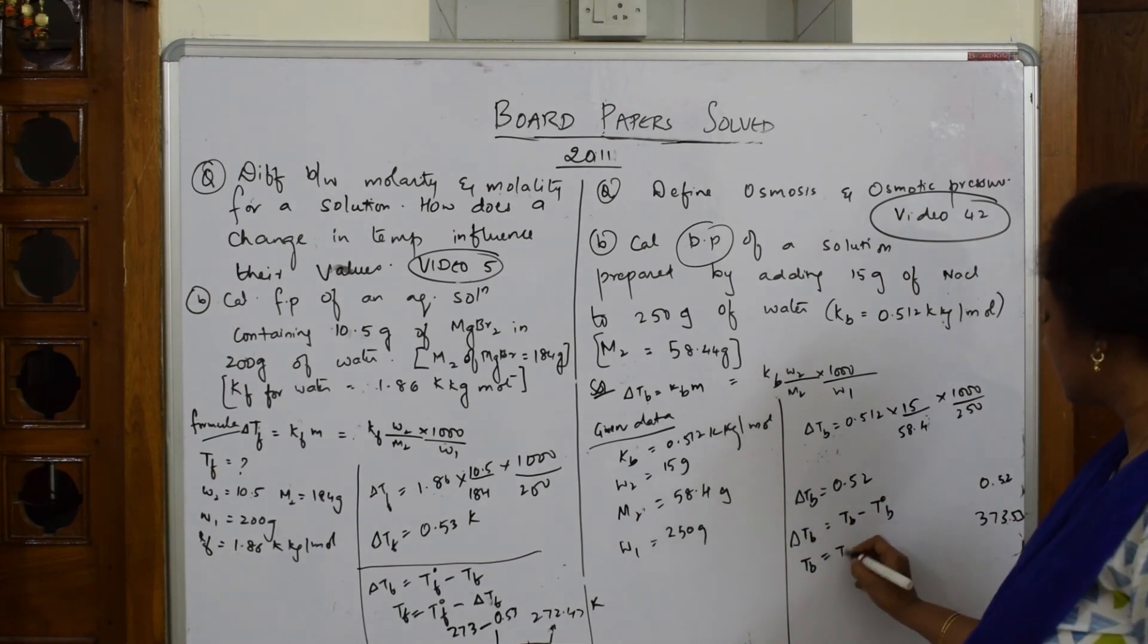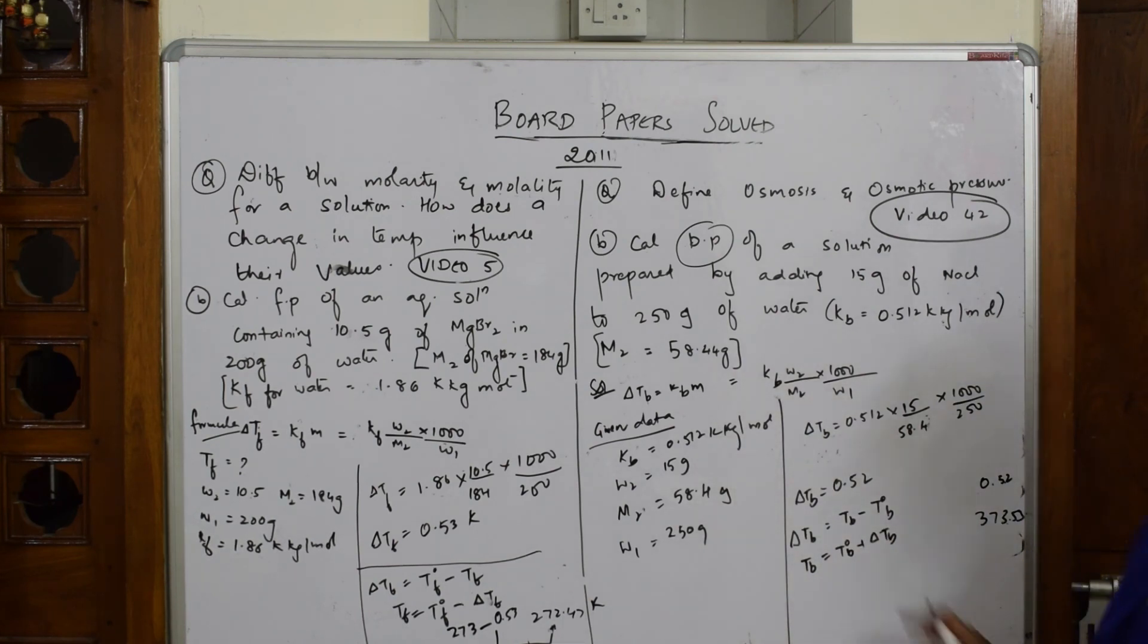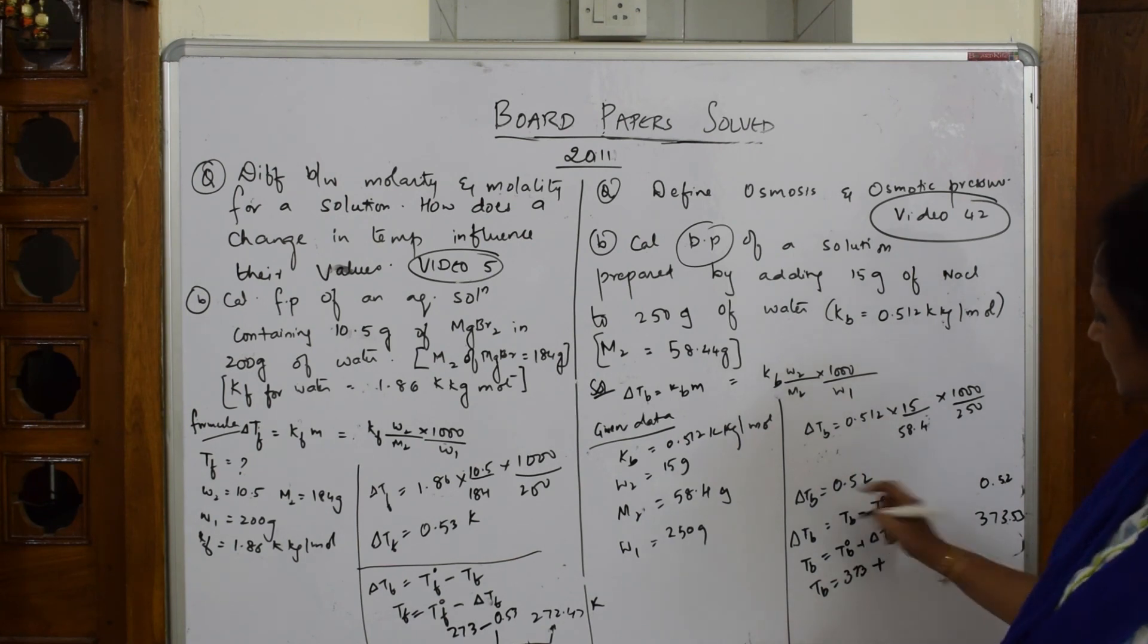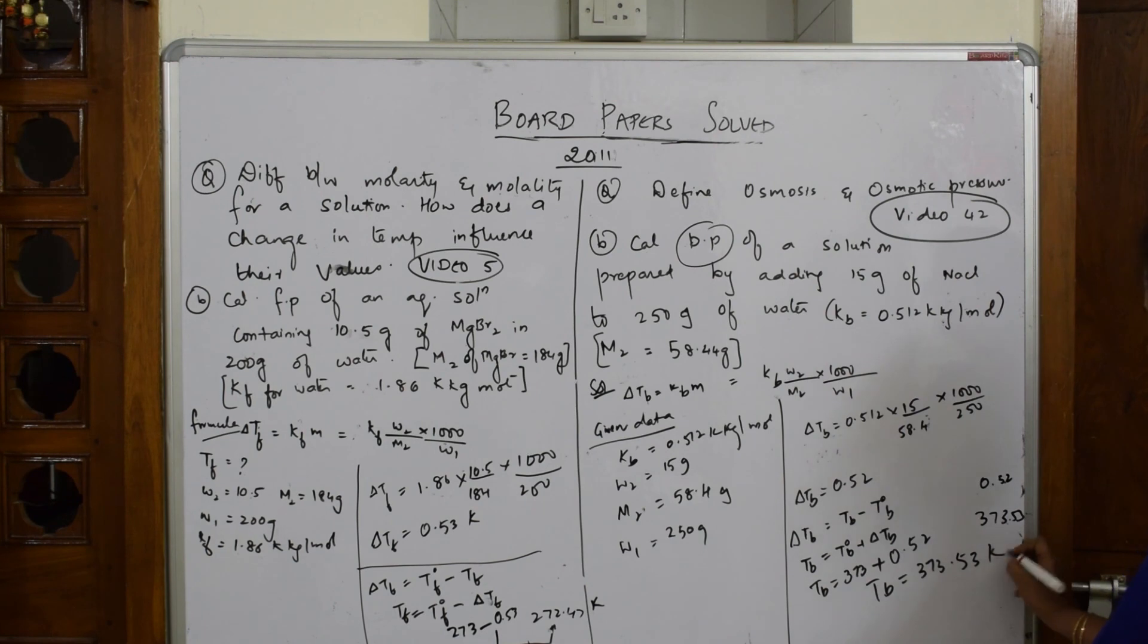I want TB out, so TB equals T naught B plus delta TB. T naught B is 373 Kelvin plus delta TB 0.52.